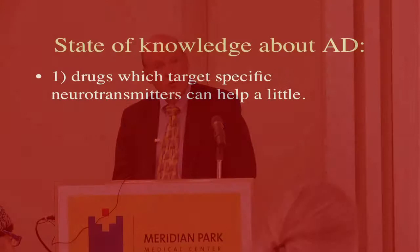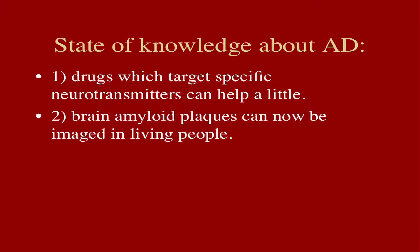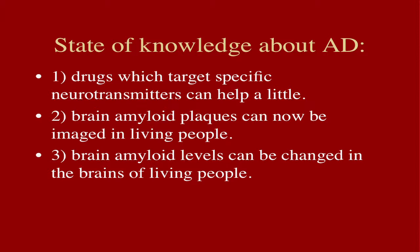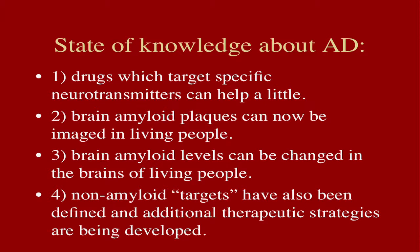I wanted to summarize by making the point that our current state of knowledge with respect to Alzheimer's disease can be summarized in a few points. We do have some approved drugs which target specific neurotransmitters and can help patients. We know now that we can image amyloid in living patients — that's a brand new ability that will really accelerate the development of clinical therapies. We know that we can modify the amount of amyloid in the brains of living patients, which is a very big advance. But it may be that amyloid is not the right target, and there are other targets being evaluated with clinical trials being developed.